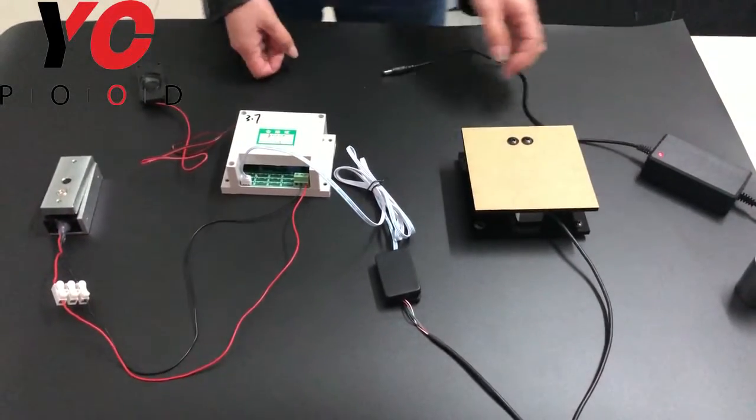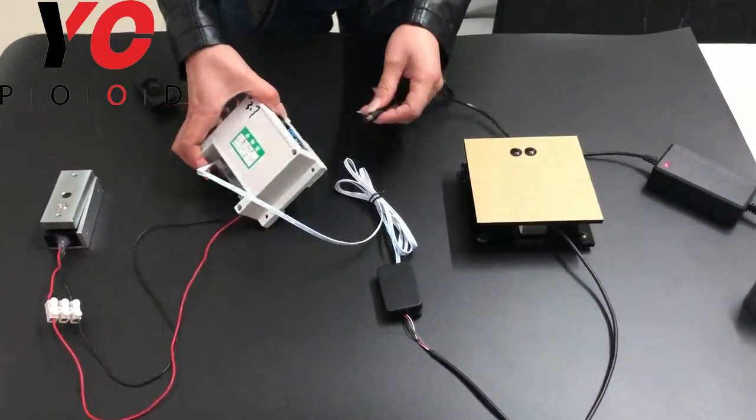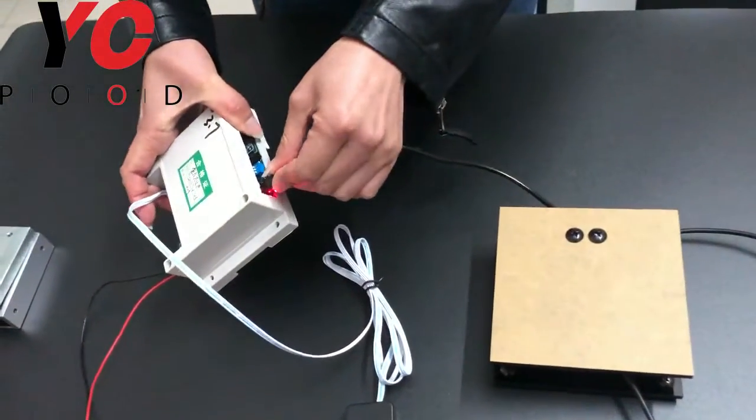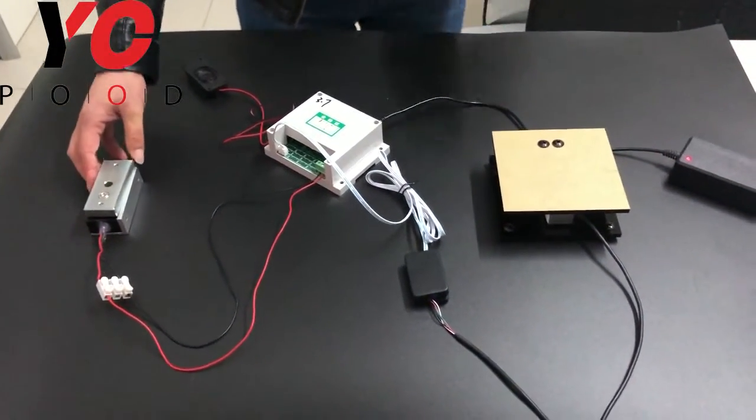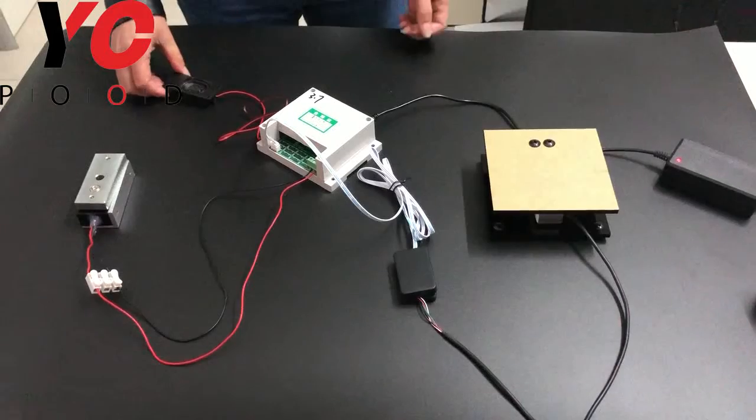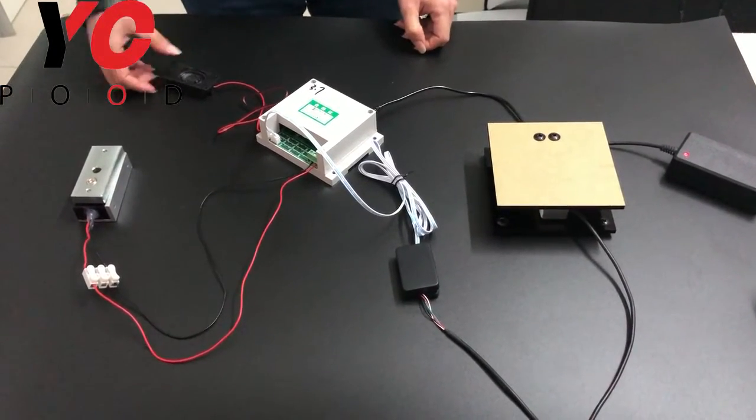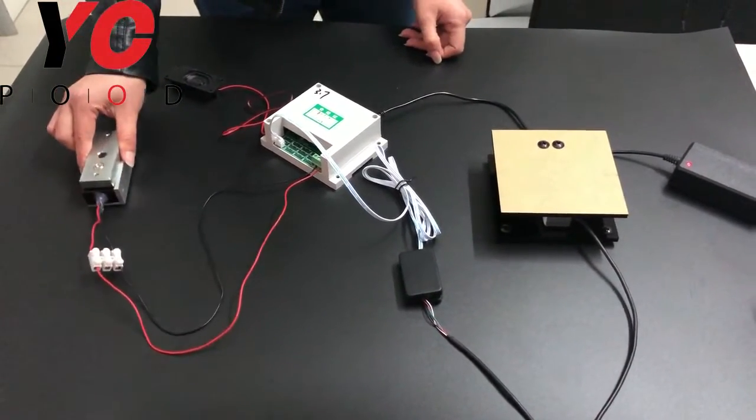Next, I will show you how to play this prop. Firstly, just power on this prop. The device is started and the current operating mode is in the same mode. The system enters the working state. As you can see, the EM lock closed.